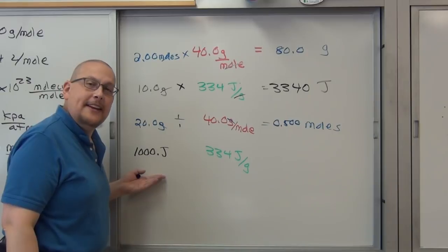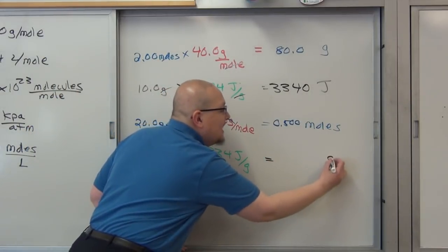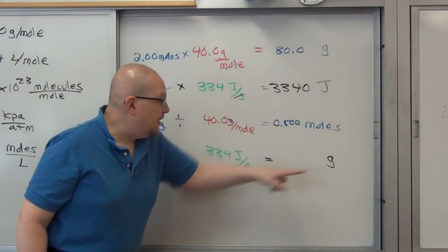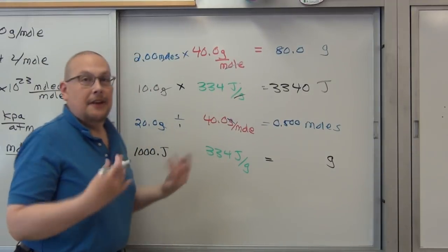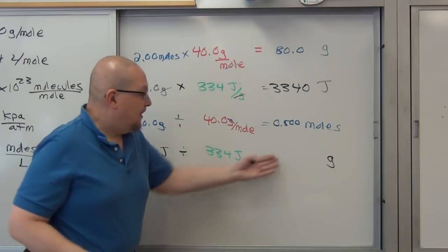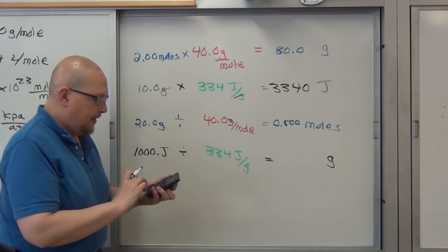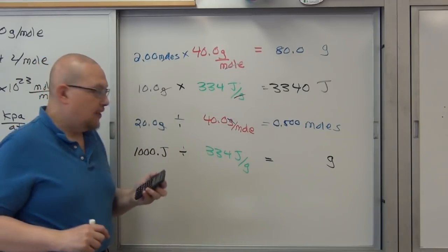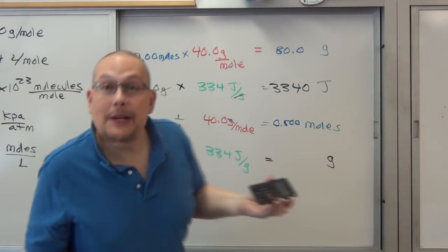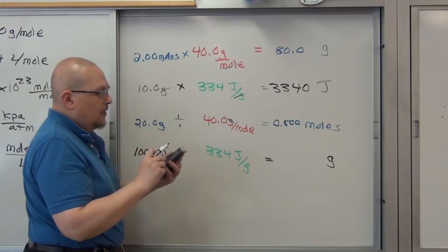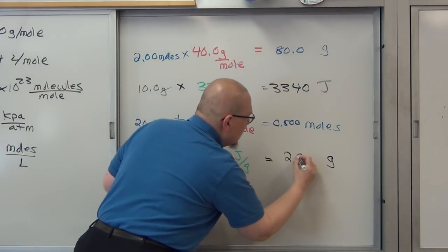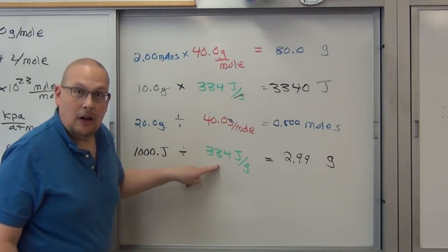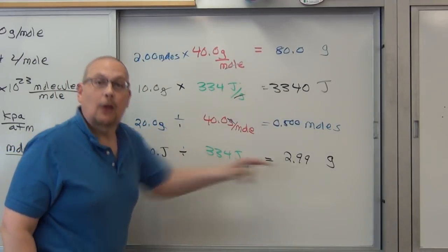Now suppose we have 1000 joules of heat energy and we want to find out how many grams of ice we can melt. We're trying to solve for the denominator, so we divide. We take 1000 and divide by 334, which gives us a lot of digits. With four sig figs and three sig figs, we round to 2.99 grams. So if we have 1000 joules available for melting ice, and it costs 334 joules per gram, that's how many grams we can melt.